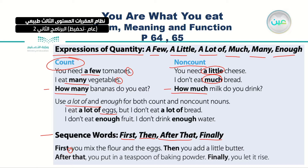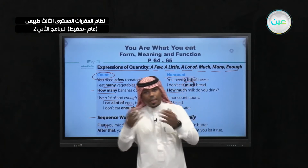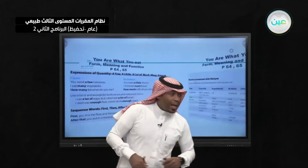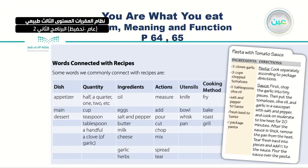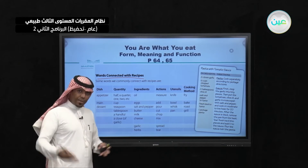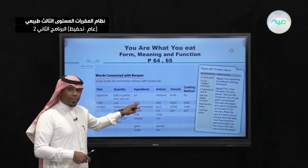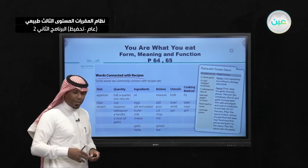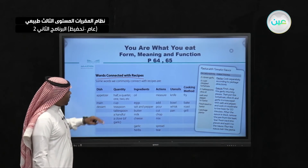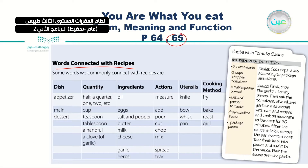Here is an example using all the sequence words: 'First, you mix the flour and the eggs. Then, you add a little butter. After that, you put in a teaspoon of baking powder. Finally, you let it rise.' As you can see: first, then, after that, and finally. The last thing we mentioned was words connected to recipes, and inshallah in today's lesson we are going to use these words. There is a table on page 65 you can use to write recipes — it includes a dish, quantity, ingredients, actions, utensils, and cooking method.